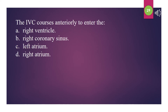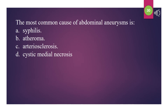The IVC courses anteriorly to enter the: A. Right ventricle. B. Right coronary sinus. C. Left atrium. D. Right atrium. The answer is D: Right atrium. The most common cause of abdominal aneurysms is: A. Syphilis. B. Atheroma. C. Arteriosclerosis. D. Cystic medial necrosis. The answer is C: Arteriosclerosis.